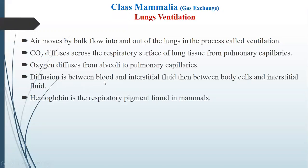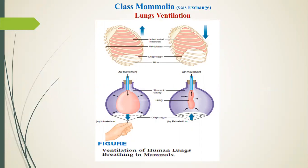The first diffusion is between blood and interstitial fluid, and then between body cells and interstitial fluid. Hemoglobin is a respiratory pigment found in mammals. Hemoglobin is a carrier of oxygen.